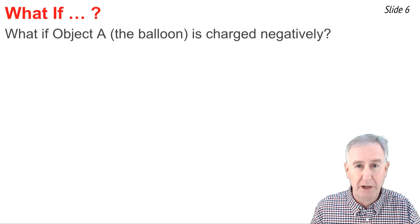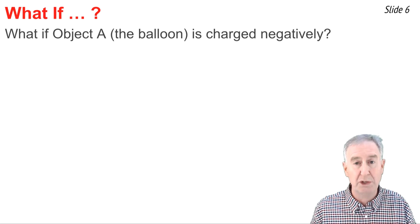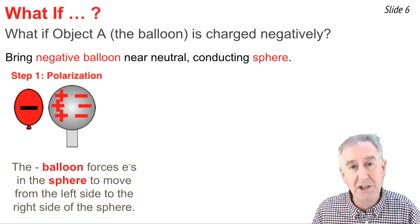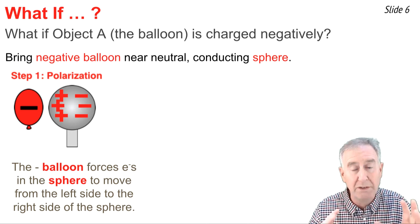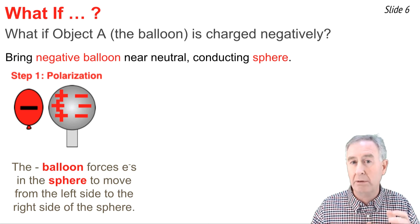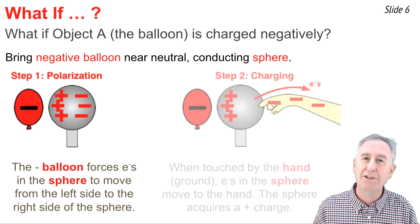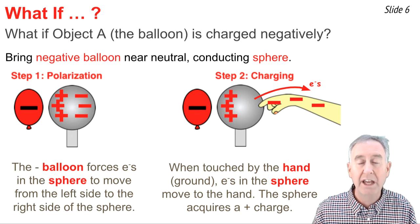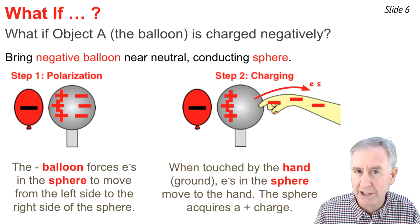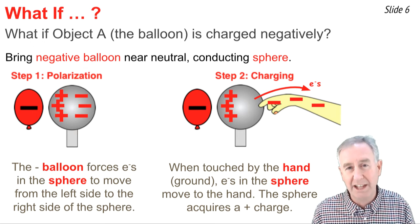What would happen if the balloon is charged negatively? If object A is charged negatively, then object X is going to acquire a positive charge. We can explain it in two steps. In the polarization step, the negatively charged balloon forces electrons within the sphere to be repelled away, moving from the left side to the right side. That leaves an excess of positive charge on the left and excess of negative charge on the right. In the charging step, the hand touches the sphere, and electrons leave the sphere and enter the hand, pushed out by repulsion from the negatively charged balloon. This leaves the sphere charged positively since it has lost electrons.